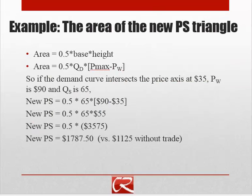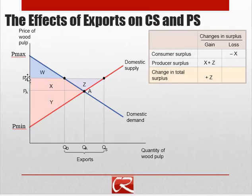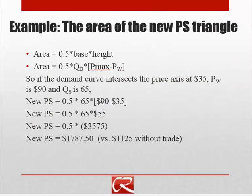We can do the same thing with producer surplus — figuring out the area of the new producer surplus triangle. That triangle has height of PW minus P-min and width of QS. The world price is the same as in the consumer surplus example, but P-min and quantity differ. Quantity supplied is 65 versus 35 for consumer surplus. Working through the math, the new level of producer surplus is $1,787.50, whereas it was $1,125 without trade.